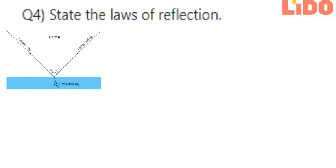Before we start with the statement, let's see a few terms. First, the ray — as you see in the figure, the ray coming is called the incident ray and the ray going out is called the reflected ray. The normal is created between the reflected ray and the incident ray. The angle created by the incident ray and the normal is theta i, and the angle created by the reflected ray and the normal is denoted as theta r.